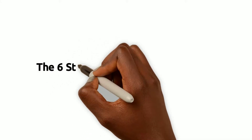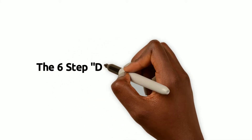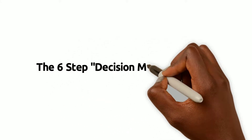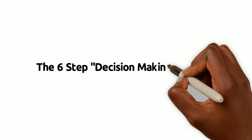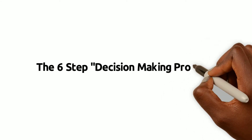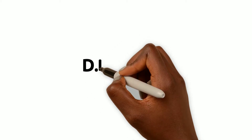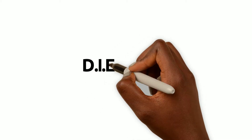One way to decide between wants and the next best alternative is to use a formal decision-making process. If you search online, you'll find a number of them, and one of the most popular is the six-step decision-making process that uses the acronym DICAR.